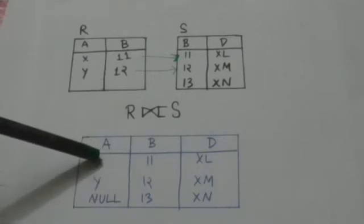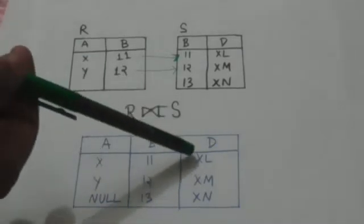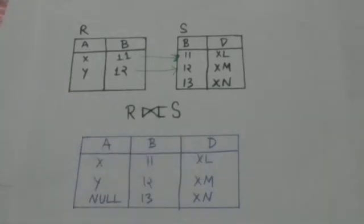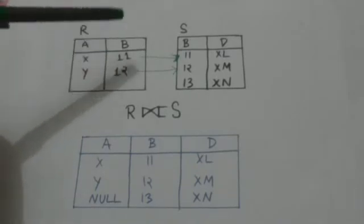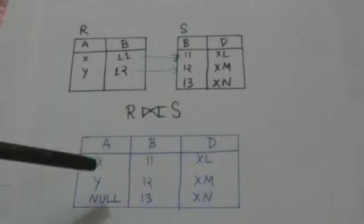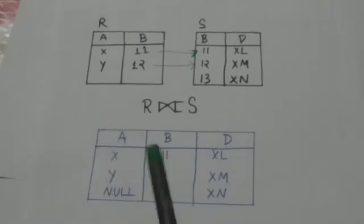This tuple of the resulting relation is formed by combining the tuple of relation R with the tuple of relation S having the same value of attribute B, and then removing duplicate attributes. This tuple of the resulting relation is also formed in the same way.